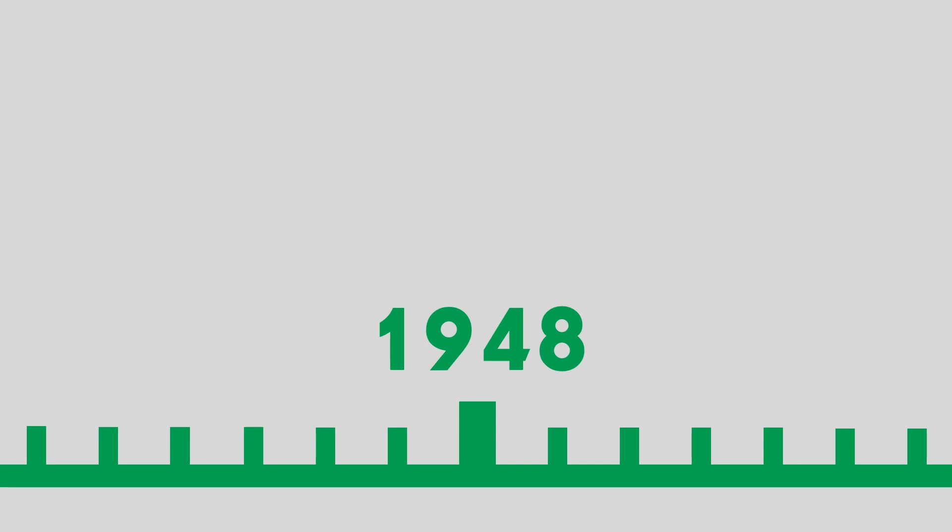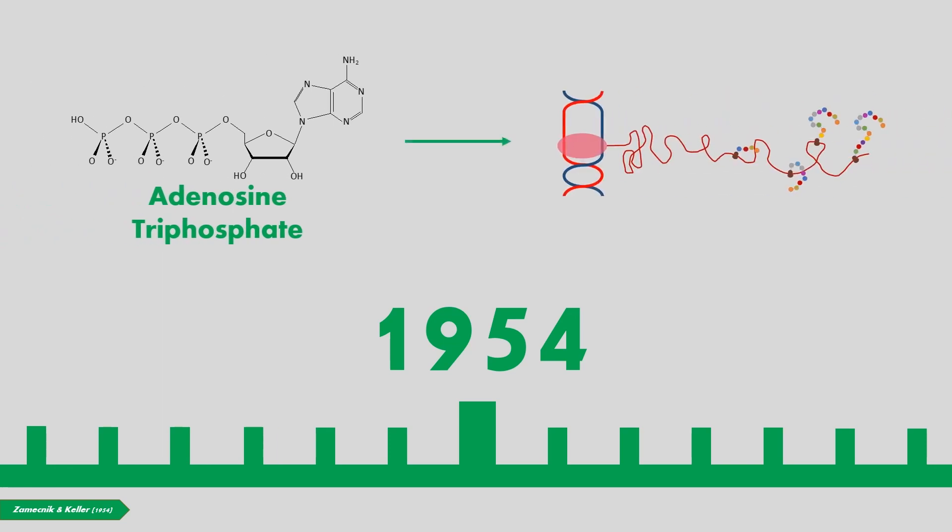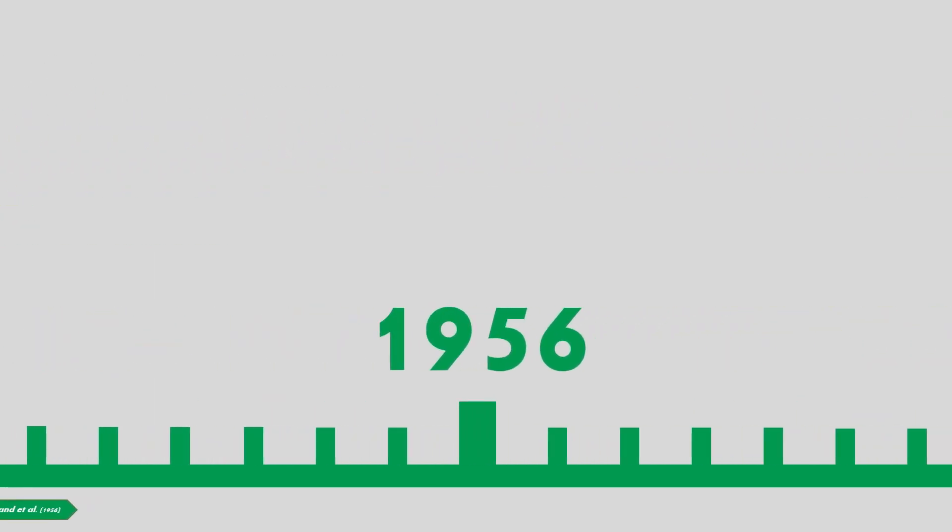Using variations of this method, scientists propelled the field forward with discoveries like the requirement of ATP in protein synthesis, that amino acids must be activated prior to protein synthesis, and that activation is reversible. In combination, these discoveries point towards the existence of a collection of enzymes, each specific to a single amino acid that convert that amino acid into an activated state upon association with ATP. Only then can an amino acid become part of a protein. However, they still couldn't explain why all of this was necessary.